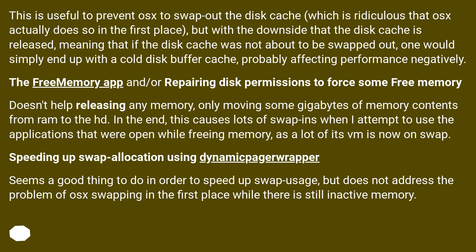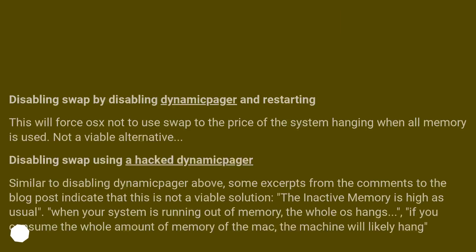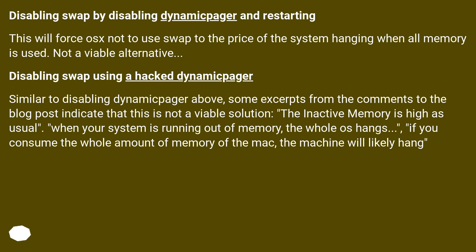In the end, this causes lots of swap-ins when attempting to use applications that were open while freeing memory, as a lot of their VM is now on swap. Speeding up swap allocation using dynamic_pager seems a good thing to speed up swap usage, but does not address the problem of OS swapping in the first place while there is still inactive memory. Disabling swap by disabling dynamic_pager and restarting will force the OS not to use swap, but at the price of the system hanging when all memory is used — not a viable alternative.